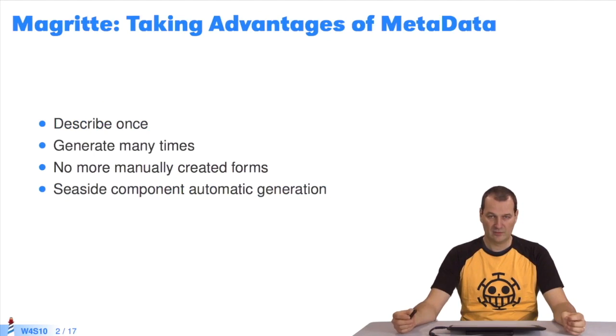Magritte is a framework based on the hypothesis that if you describe your data once, it can generate several objects based on this data, web forms and graphic interfaces, for example. In this course, I'll be focusing on showing you how to generate Seaside components so that you can code web applications faster.